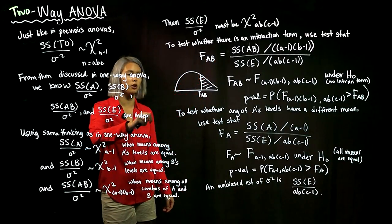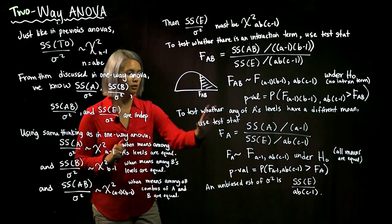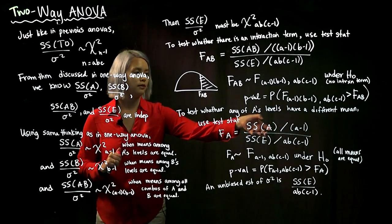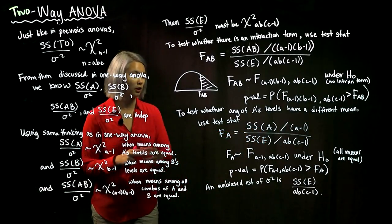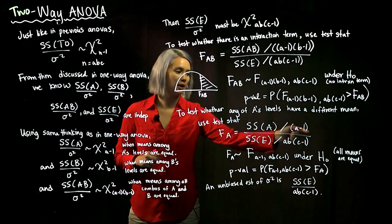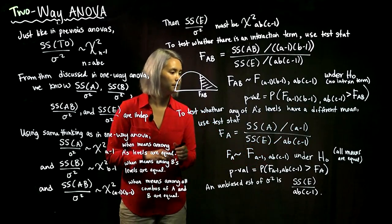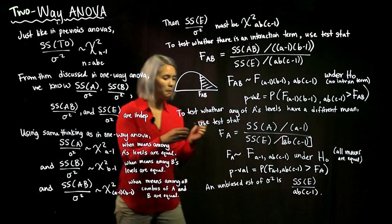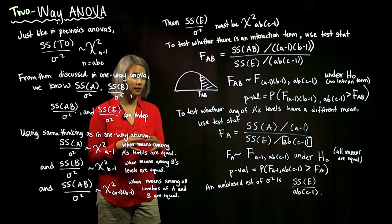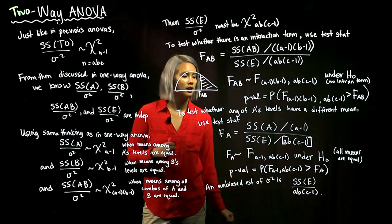Now let's talk about the main effects. For factor A — B is the exact same story — to test whether any of A's levels have a different mean, we use the following test statistic: SSA divided by (a minus 1) in the numerator, and SSE divided by ab(c minus 1) in the denominator. If all the means for the levels of A are actually equal, then this test statistic has an F distribution with a minus 1 and ab(c minus 1) degrees of freedom.